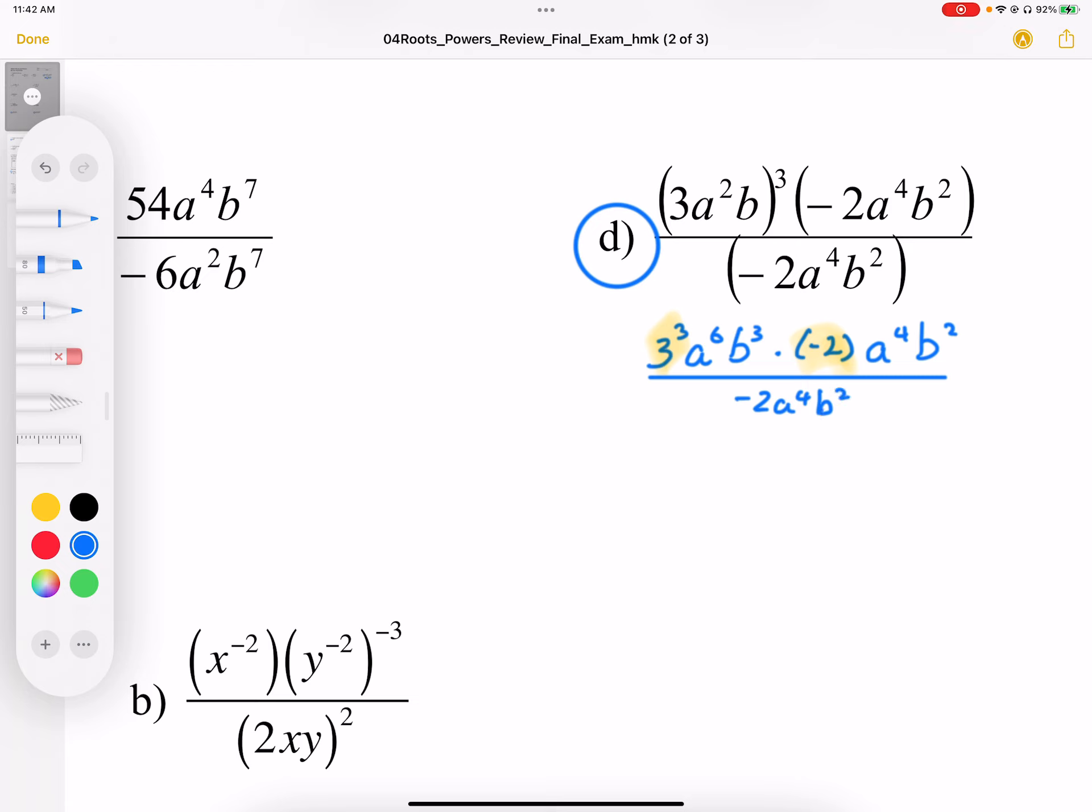Now we should try to simplify things whenever we can. We have common factors here. Times by negative 2 divide by negative 2. There's no pluses in here, this is all connected by multiplication. Every piece of these represents a factor.